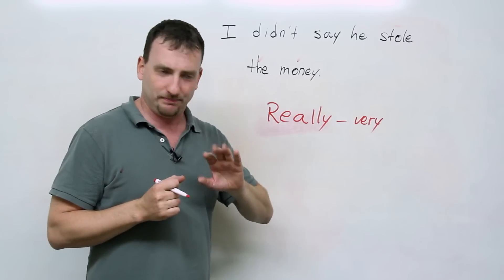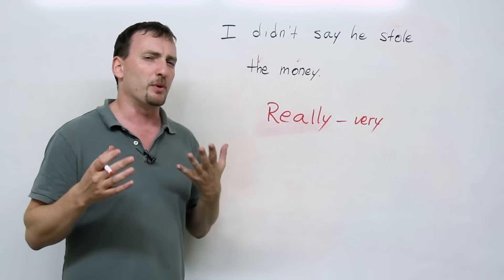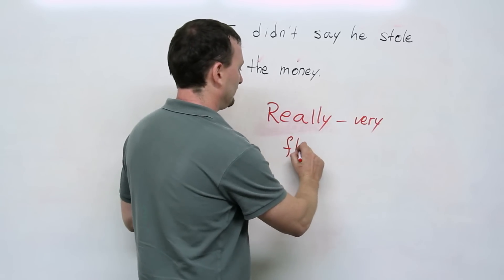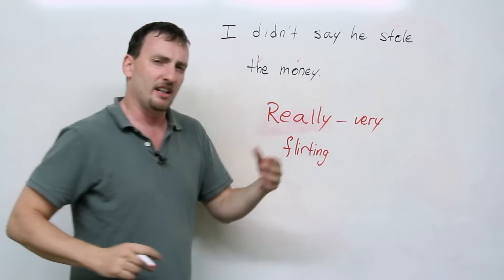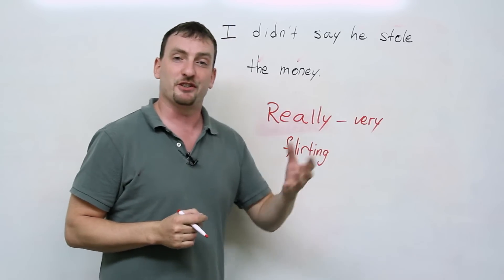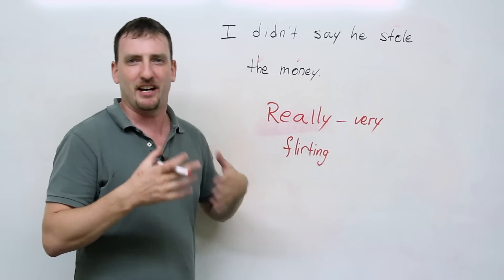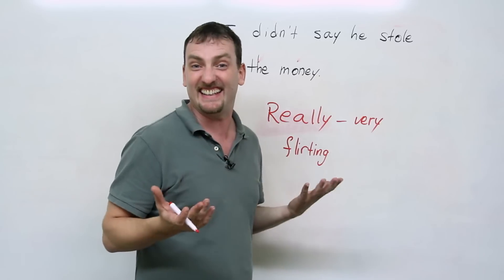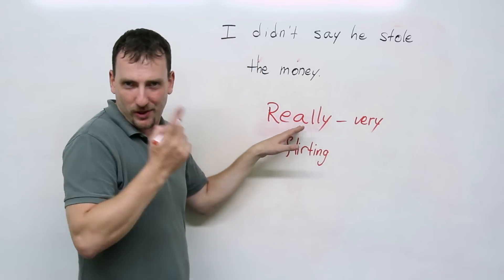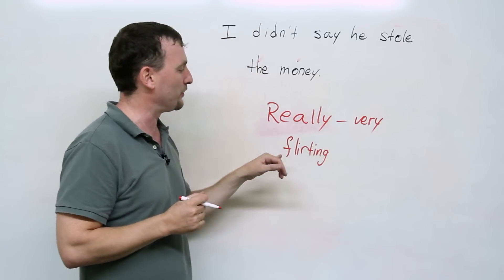Another situation. Do you know what flirting is? A girl comes to you and says, oh, I like your shirt. And you go, really? Like that, right? You're flirting. You're trying to play with her. Trying to get a date out of her, maybe. All from one word. You see? All these different meanings from one word.